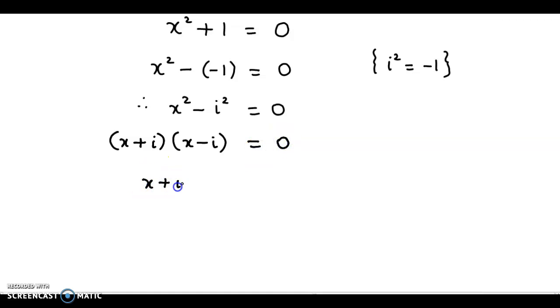So, we have the answers. If we consider x plus iota equal to 0, the value for x is equal to minus iota. So, this is the first answer.